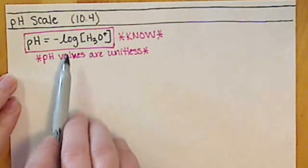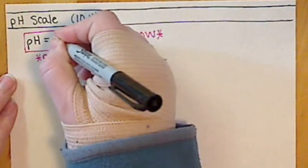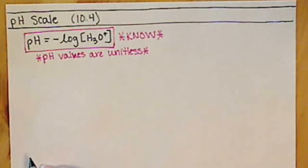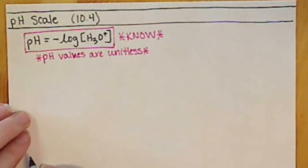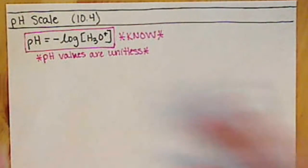If we take the logarithm values of those, it's going to take the number according to its base of 10 — base 10 meaning we have 10 numerical values: 0 through 9. That's what our number system is based off of, and it's going to put it on a more manageable scale. Our typical pH scale is going to be between 0 and 14.